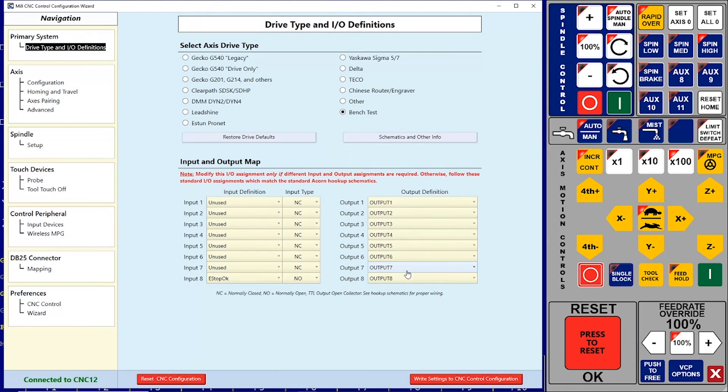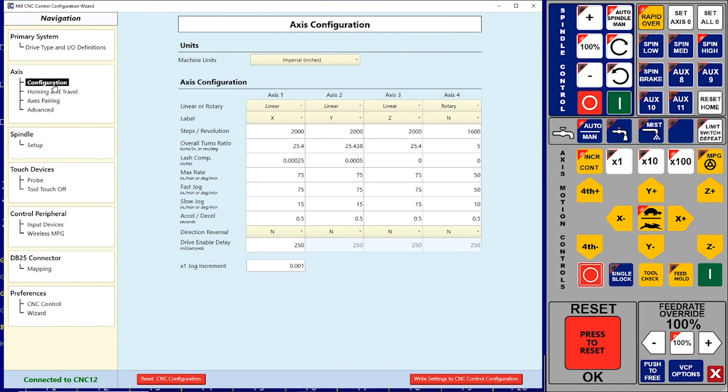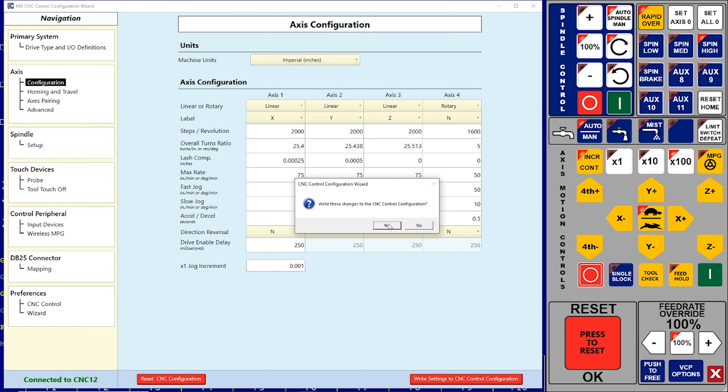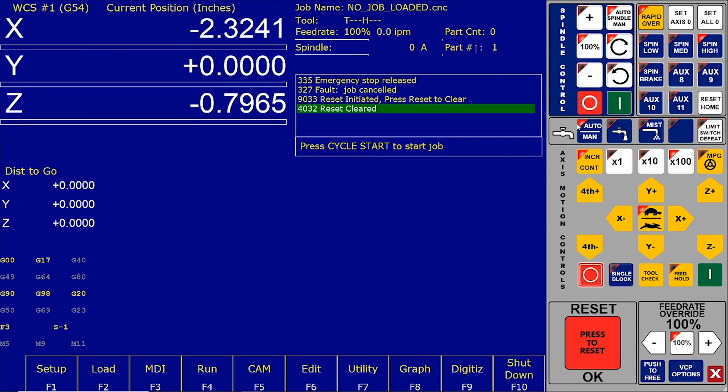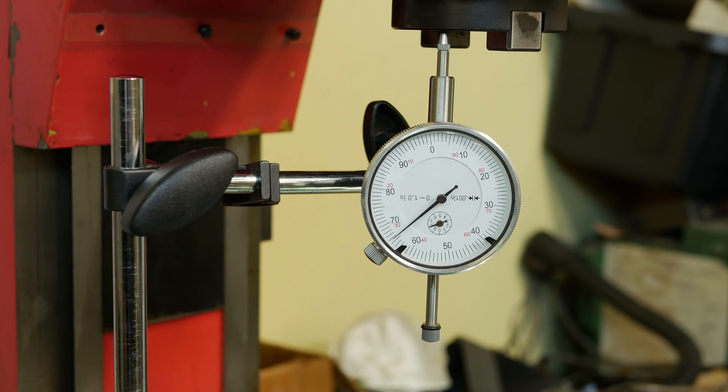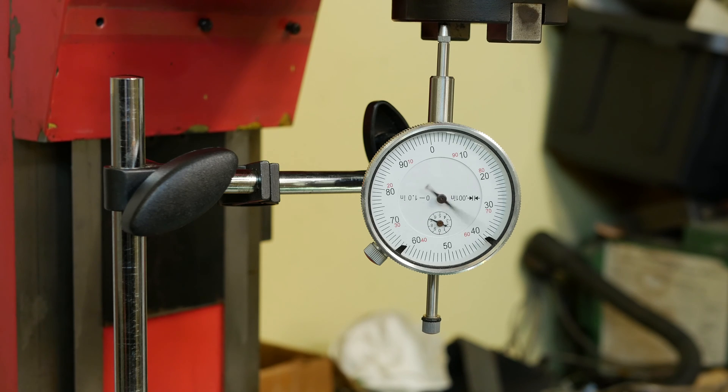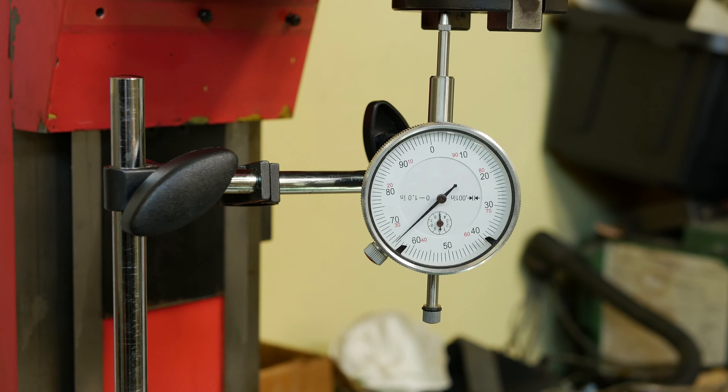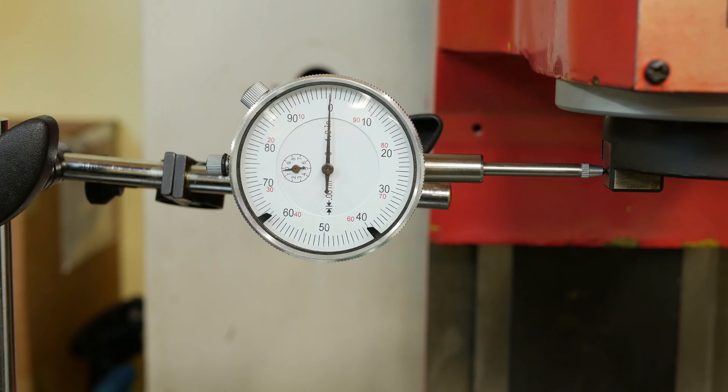So I went and I did some tweaking in the parameters for the Z-axis and the X-axis. The X-axis is actually really good, as I anticipated it would be. Still some tweaking that can be done to improve it, but for the time being, we're in the ballpark. I can always work on that some more down the road. As a matter of fact, I don't even think the gib is installed in the Z-axis right now. So there's some more things to be done there.